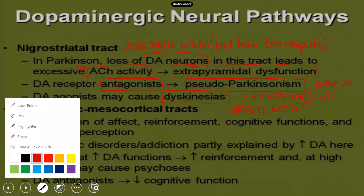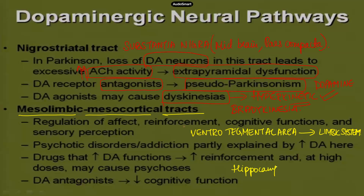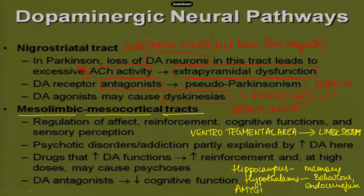A second pathway of relevance is the mesolimbic/mesocortical tracts. The cell bodies are situated in the ventrotegmental area, and the outputs are located in the limbic system. The limbic structures include the hippocampus, which controls memory, and the hypothalamus, which controls certain aspects of behavior — particularly we are banking on the endocrine function of the hypothalamus. There is also the amygdala, which is important in aggressive-type responses.